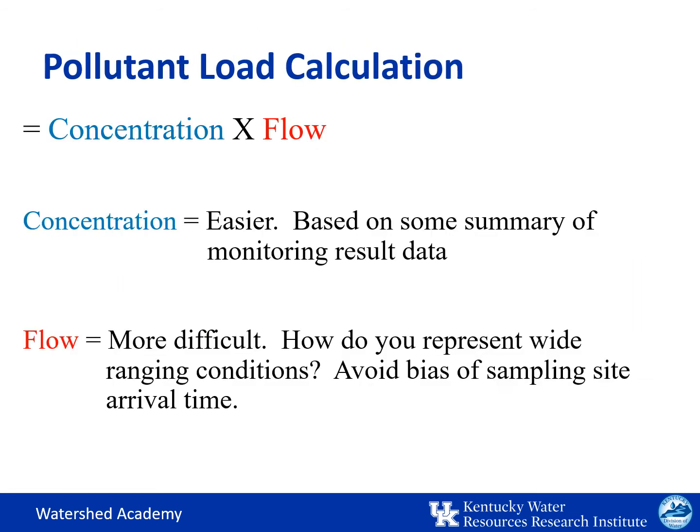The process may seem very straightforward at this point. However, we need to talk about the second part of the equation: flow. Determining the concentration to use in a load calculation will be based on some summary calculations, such as an average or geometric mean from your sampling results. However, determining which flow rate to use can be more challenging since flow rates can vary greatly and you don't want to bias your loading rate based on a single flow observation.